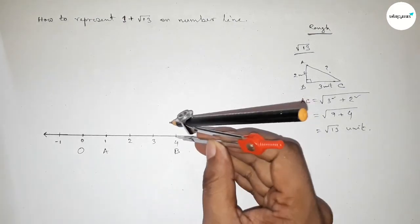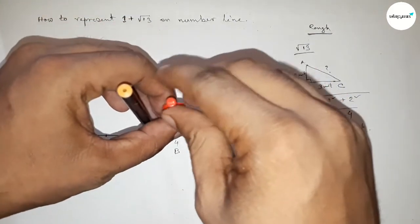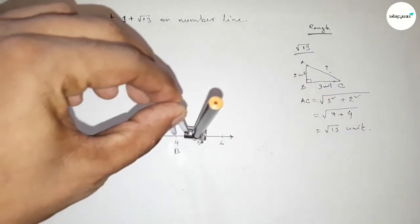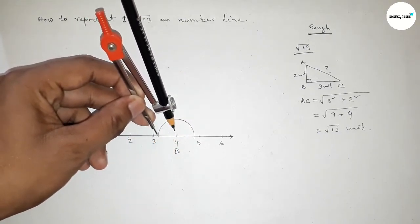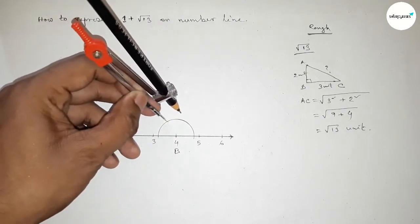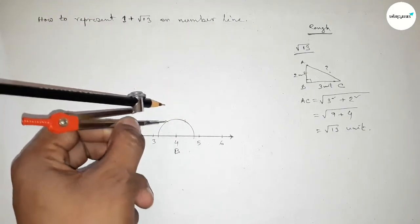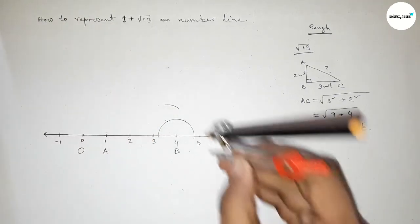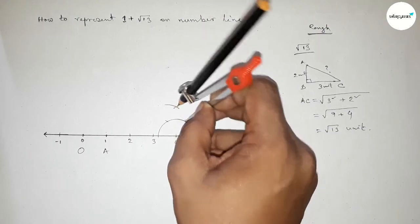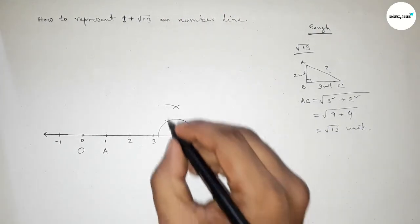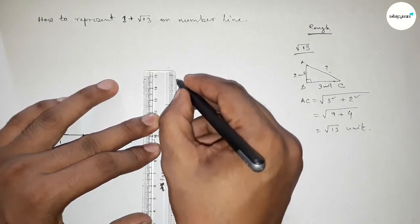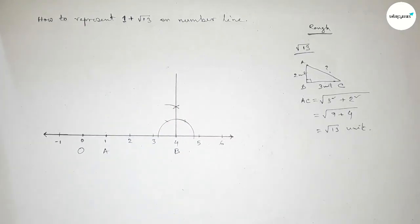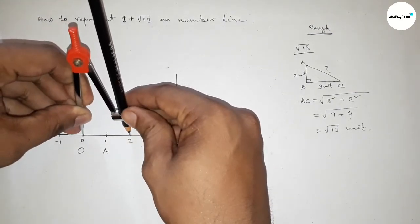Putting the compass on point B, taking any length and drawing an arc. Then placing the compass at the new position, taking the same length and cutting arcs. Placing the compass again and cutting here so both curves intersect at a point. Joining this line to get a 90-degree angle at point B. Next, taking two unit length using the compass.